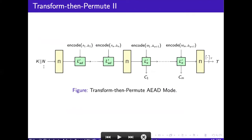We define the Transform Then Permute AEAD mode as follows. On receiving nonce N, associated data A, and message M, we first divide the associated data A into blocks A_1, A_2, ..., A_l. Similarly we divide the message M into blocks M_1 up to M_m. We set K concatenated with N as the initial input to the primitive, and to that output we run the L'_AD function to process the associated data. To that output we call the primitive again and start processing the message data with the help of the L_C function. After processing all the messages we run the primitive once more and output the top tau bits of the primitive output as the tag.